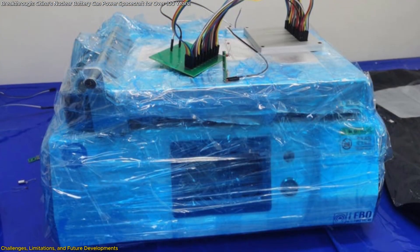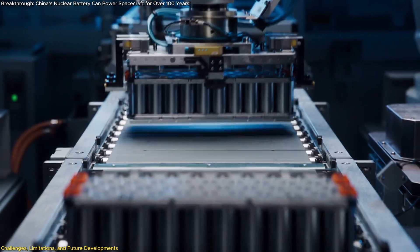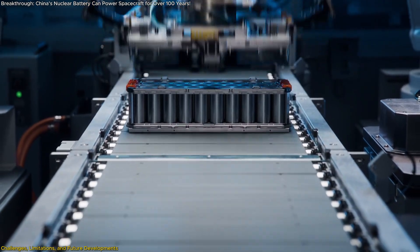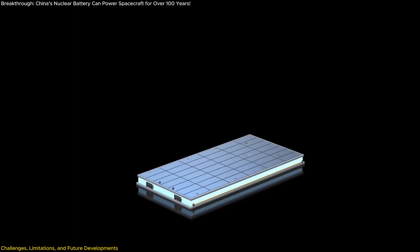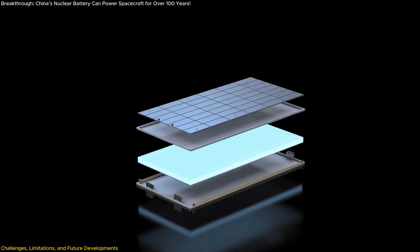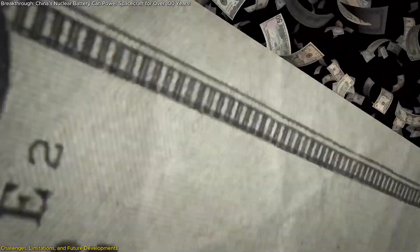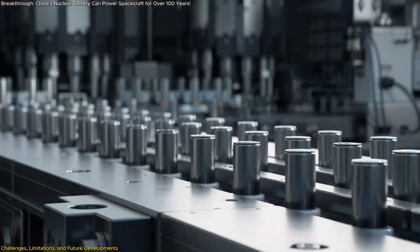Zhulong-1 is still in its early prototype phase, and manufacturing carbon-14 batteries on a large scale will not be cheap. The cost of producing and refining C-14, combined with the specialized semiconductor technology, makes mass production a costly endeavor. If production costs can be reduced, however, the battery could become a viable alternative to traditional energy storage solutions.